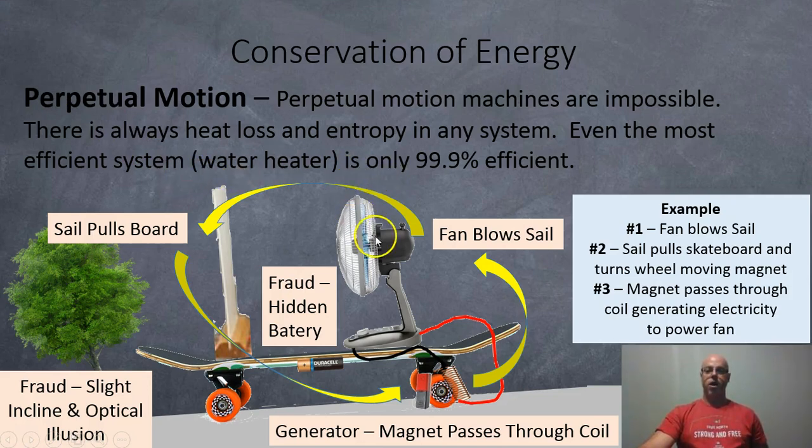So here's an example of a perpetual motion machine. So first of all, you've got a fan. The fan blows a sail. The sail pulls the board forward, which rotates the wheels. Over here, we've got a wheel, which is attached to a magnet and a coil. So the magnet's going to go through the coil. This is basically an electrical generator right there. And that's going to make the electricity to power the fan. Now, none of these subsystems are 100% efficient. So the whole system is definitely not 100% efficient.